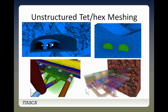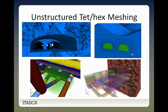Unstructured hex meshing is a very fast and easy way to obtain a model. Tetrahedral models in FLAC3D can represent plasticity using the nodal mixed discretization function. Here you see examples where, after the tetrahedral grid was created in the vicinity of a tunnel surface, the zones were subdivided into hexahedra in a simplistic way. This increases locally the number of zones by a factor of four — something I refer to as the poor man's hexahedral meshing.